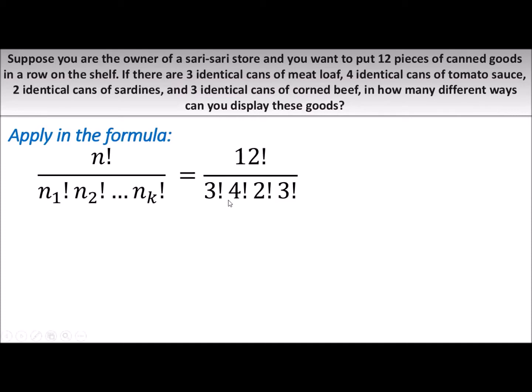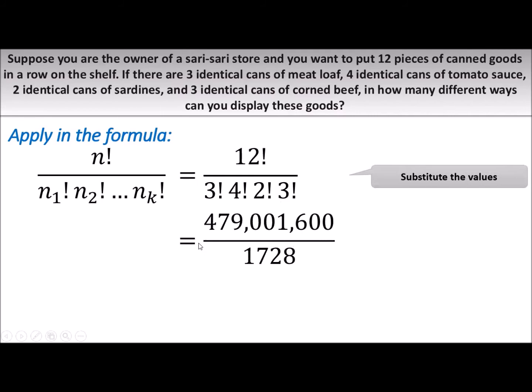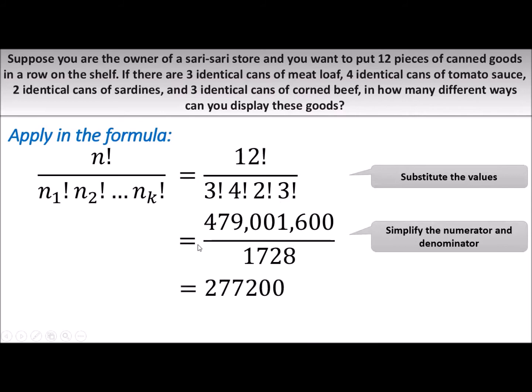Medyo maselan yung ibang calculators — you could simply put a multiplication sign in between. Substituting the values and calculating, the value of 12 factorial is 479,001,600. The denominator's product is 1,728. Dividing them, the answer is 277,200 ways. Imagine that — sa dosing canned goods pa lang na yan, napakadami ng paraan para maayos.